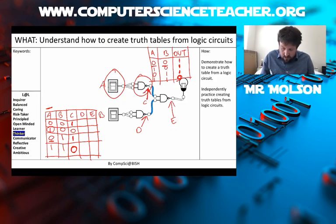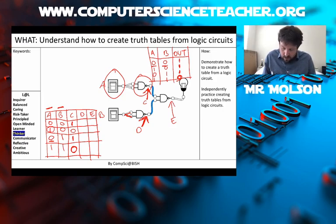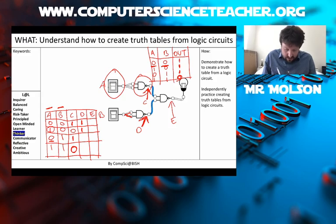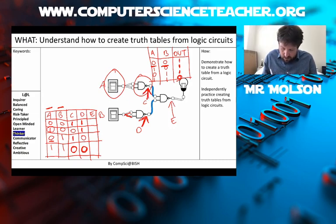Now we'll do the output at D. The inputs to that NAND gate are both B. So we're looking at the B column. Zero and zero — that's a one. Zero and zero again — that's a one. One and one — that's a zero. And one and one — that's also a zero. We've completed both intermediate output columns C and D. Now we're going to do the final output column E, which takes the value in column C and column D and NANDs them together.